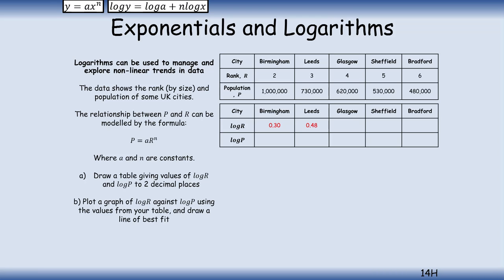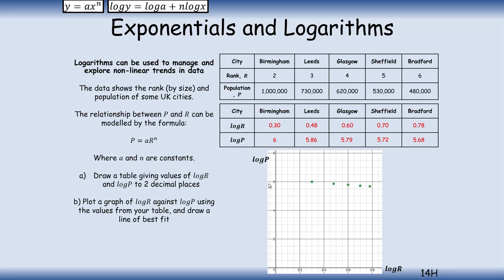The log r values are: Birmingham 0.30, Leeds 0.48, Glasgow 0.60, Sheffield 0.70, Bradford 0.78. For log p (population): Birmingham — log base 10 of 1,000,000 is 6.00; Leeds 5.86; Glasgow (620,000) and Sheffield (530,000) follow accordingly. Plot log p against log r and draw a line of best fit through those points.